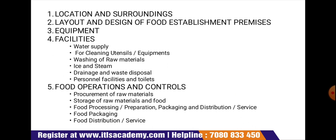The food establishment shall be located away from environmentally polluted areas and industrial activities which produce disagreeable or obnoxious odors, fumes, excessive dust and smoke, chemicals, biological emissions, and pollutants posing a serious threat of contaminating food; areas subject to flooding; areas prone to infestation of pests; and areas where waste — either solid or liquid — cannot be removed effectively. The premises should not be used for residential purposes, nor shall it have direct access from inside the premises.